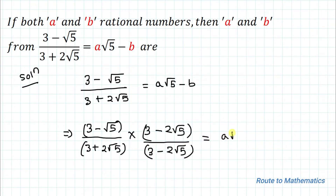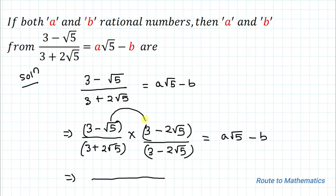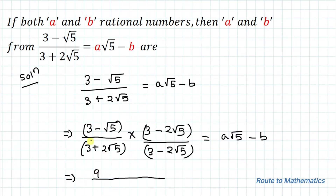The right hand side remains the same: a root 5 minus b. In the numerator we will multiply like this: 3 multiplied with 3, and 3 multiplied with 2 root 5. Similarly, root 5 multiplied with 3, and root 5 multiplied with 2 root 5.